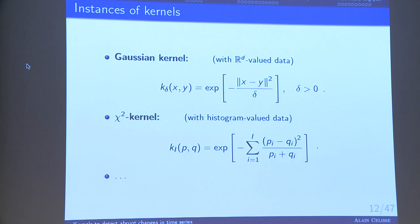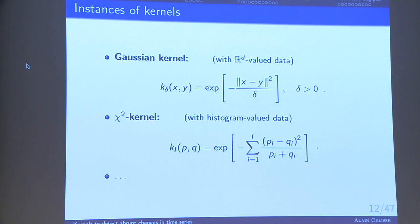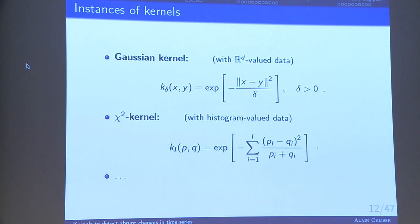Instances of kernels that are very classical in machine learning: the first one is the Gaussian kernel, which is defined in the usual way. The second one, which is perhaps less classical, is called the chi-square kernel, defined as the expectation of minus the chi-square distance between histograms with i-bins. We will use it a little bit later in the talk.